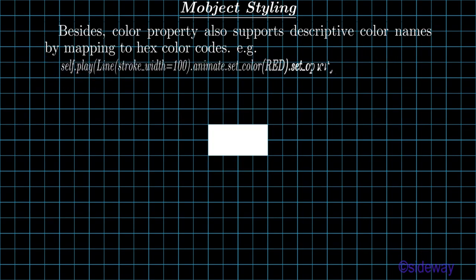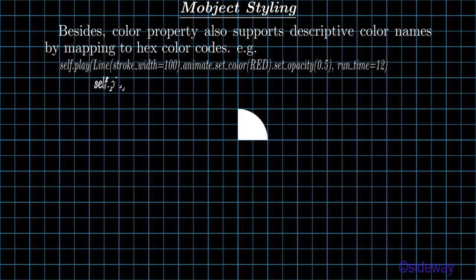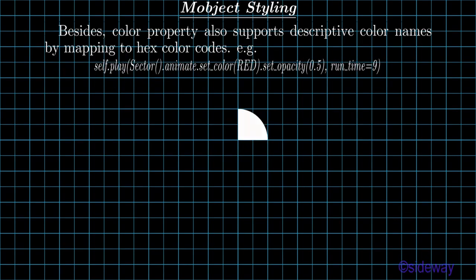self.play, line, stroke_width=100, dot.animate.set_color(RED).set_opacity(0.5), run_time=12. self.play, sector, dot.animate.set_color(RED).set_opacity(0.5), run_time=9.